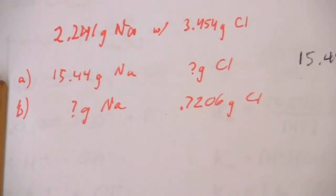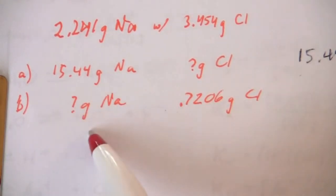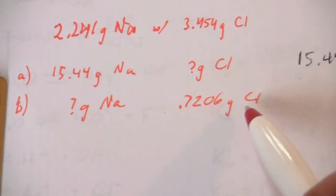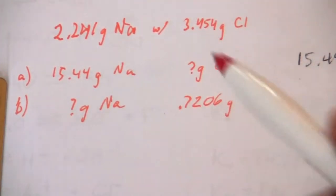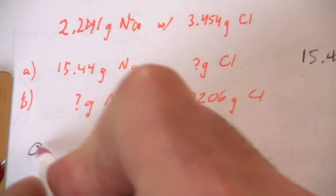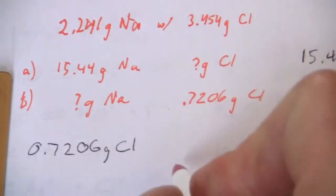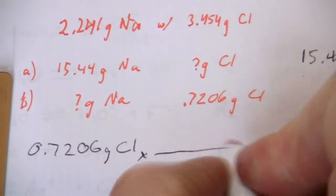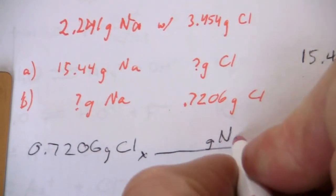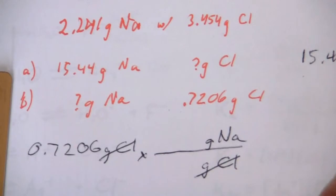Okay, and moving on to the other part, it's asking for the mass of sodium that will react with 0.7206 grams of chlorine. So we're using that same proportion and we'll set it up just the same way, 0.7206 grams of chlorine. This time we need the mass of chlorine on the bottom and the mass of sodium on the top. We need that chlorine on the bottom so that that will cancel.